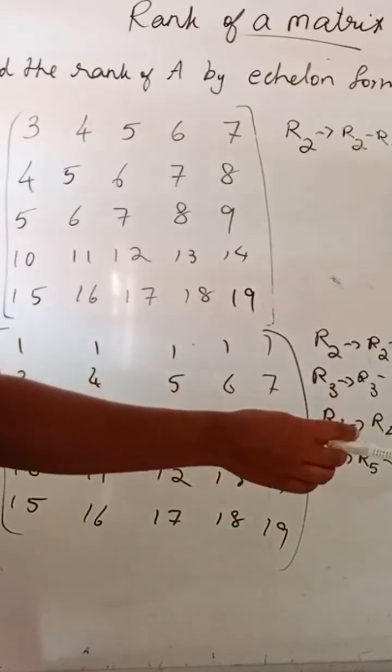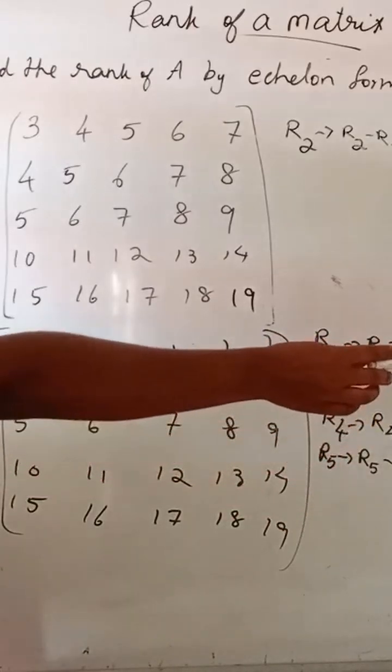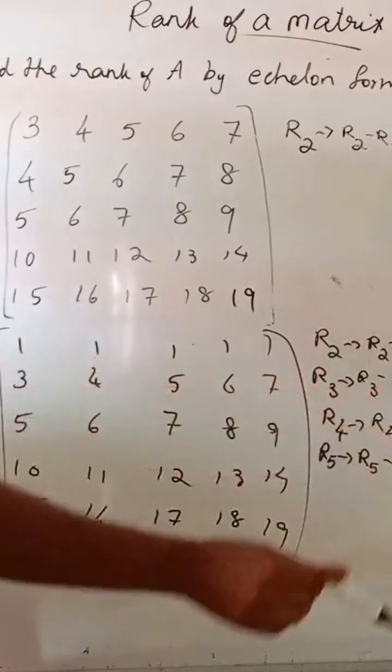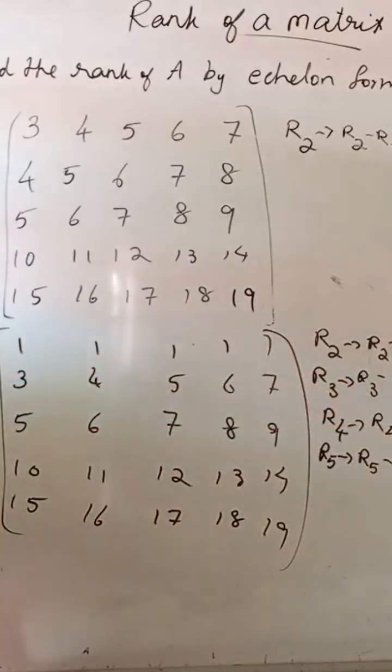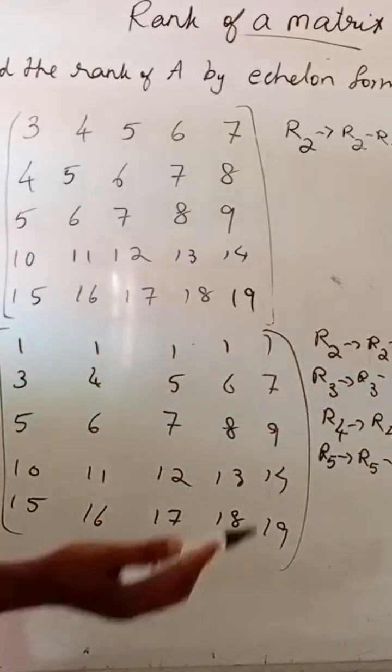4 like that. So, here these 4 rows are equal.